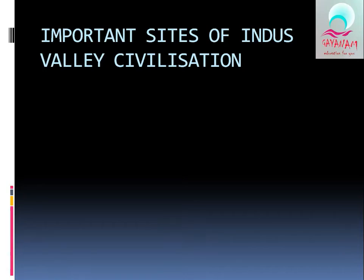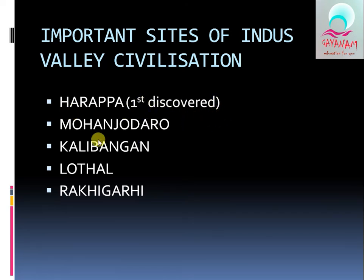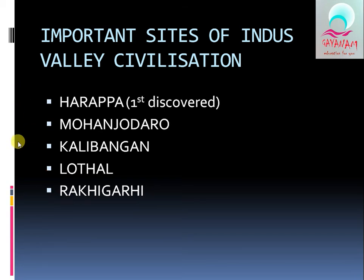The important sites of the Indus Valley Civilization include: Harappa, which was first discovered and represents a very strong society; Mohenjo-daro; Kalibangan; Lothal; and Rakhigarhi. These are the key sites of the Indus Valley Civilization.